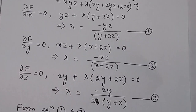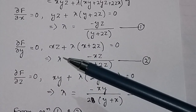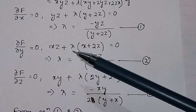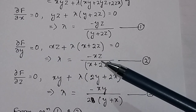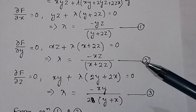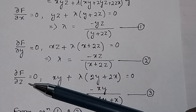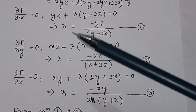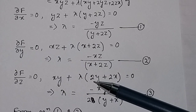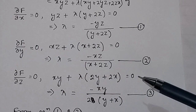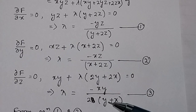Similarly, taking the partial derivative with respect to y gives xz plus lambda into (x plus 2z) equal to zero, so lambda equals minus xz divided by (x plus 2z) — this is equation 2. Taking the partial derivative with respect to z gives xy plus lambda into (2y plus 2x) equal to zero, so lambda equals minus xy divided by 2(x plus y) — this is equation 3.